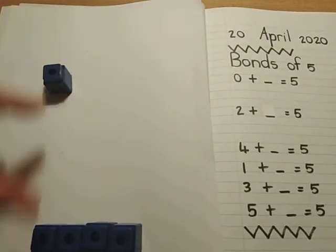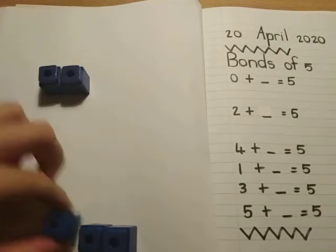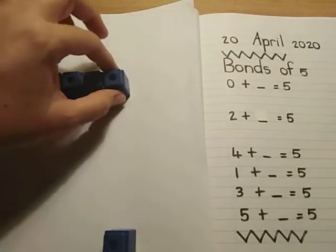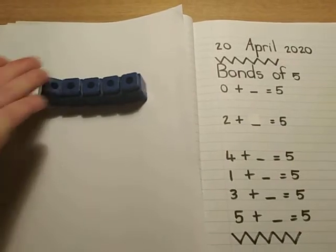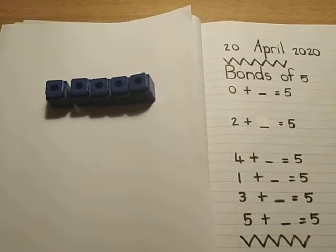So let's see, I'll add one, two, three, four, five. I had nothing and now I had to add five of them to make five.